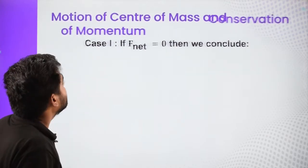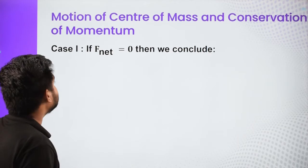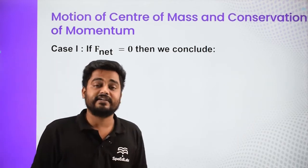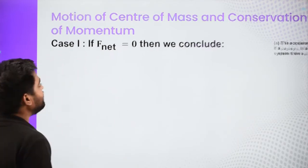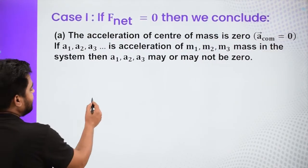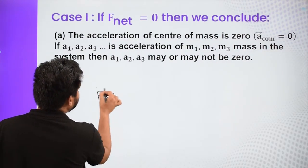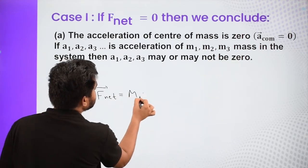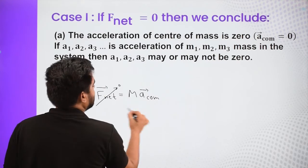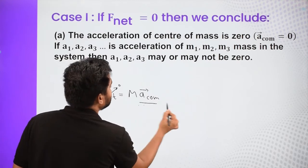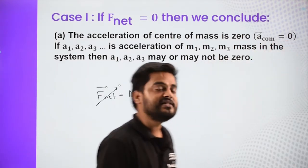Now let us discuss the motion of center of mass, case by case study. First, what if our net external force is zero? If our net external force is zero, then we know that F_net can be written as total mass into acceleration of center of mass. So if this is zero, then the acceleration of center of mass is going to be zero — the a_CM is nothing but zero.